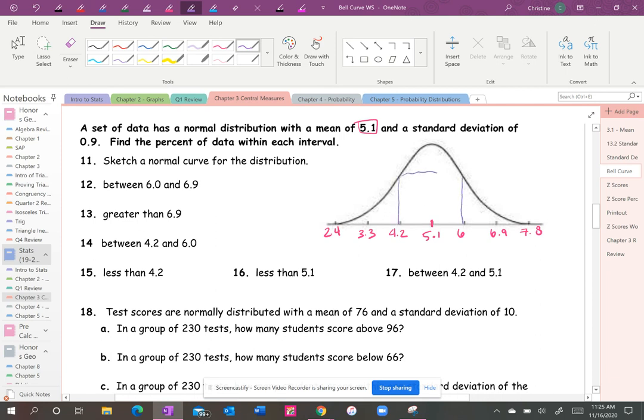This entire thing is going to be 68, but just to make this easier I'm going to make this 34, which is half on the right and half on the left. Now I need to make up a hundred percent of the data. I already have 68, and I know that this between 3.3 and 6.9 needs to be 95 percent of the data.